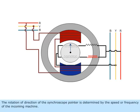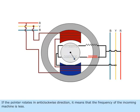The rotation direction of the synchroscope pointer is determined by the speed or frequency of the incoming machine. If the pointer rotates in anticlockwise direction, it means that the frequency of the incoming machine is less. If the pointer rotates in clockwise direction, it means that the frequency of the incoming machine is more.